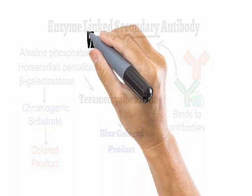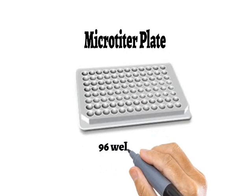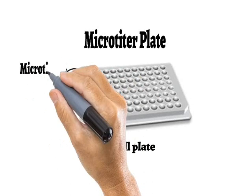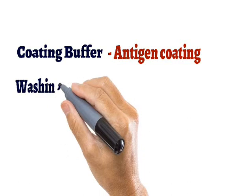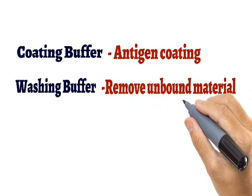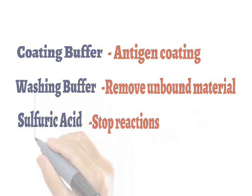Another main requirement is the microtiter plate. It is a small plate having many small wells, generally 96, and therefore it is also called a 96-well plate. Each small well is called a microtiter well. Apart from these basic requirements, we will need coating buffer, which is required to coat and attach the antigen to the microtiter well. Next is washing buffer, required to wash and remove unbound material from the well. And last is sulfuric acid or phosphoric acid, which is used to stop the enzyme-catalyzed reactions.